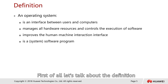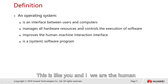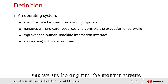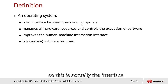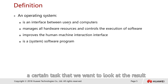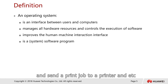What is an operating system? An operating system is actually an interface between users and computers. We are the humans — we use a mouse, we use a keyboard, and we look at monitor screens. This is the interface. Through our input devices, we're actually instructing the computers to perform certain tasks, for example, playing music, playing a video or movies, or sending a print job to a printer.